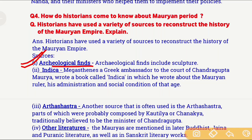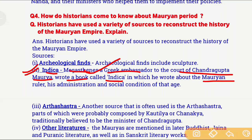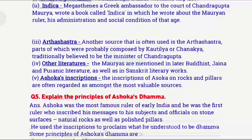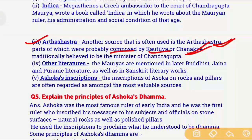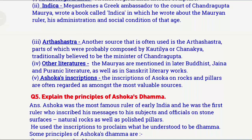The first important source is archaeological finds, which include sculptures. The next important source is Indica — written by Megasthenes, who was a Greek ambassador to the court of Chandragupta Maurya. In Indica, he described the Mauryan rulers, the administration of the Mauryan Empire, and the social conditions during the Mauryan period. The third important source is Arthashastra, composed by Kautilya — also called Chanakya — who was traditionally believed to be the minister of Chandragupta Maurya.